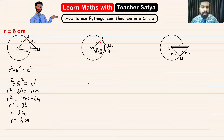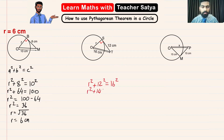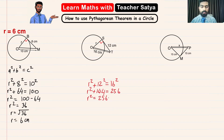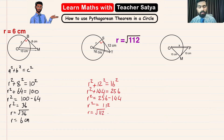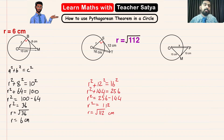So we have r² + 12² = 16². That gives us r² + 144 = 256, since 16 × 16 = 256. Therefore r² = 256 − 144 = 112. So r = √112 centimeters. You can leave it as a square root, or in some questions they'll ask you to convert it to a decimal answer.